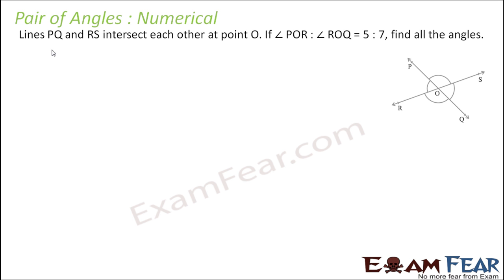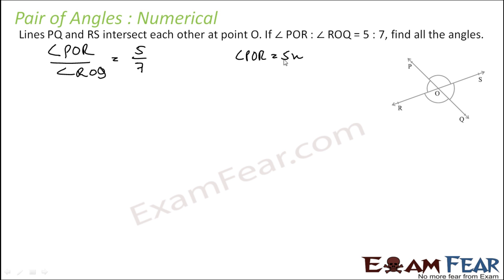Let's take an example. Lines PQ and RS intersect each other at a point O, forming vertically opposite angles. If the ratio of angle POR to angle ROQ is 5 to 7, then we can let angle POR equal 5x and angle ROQ equal 7x.